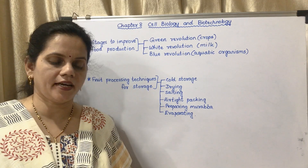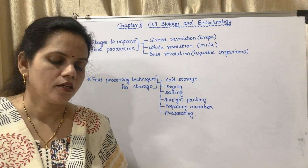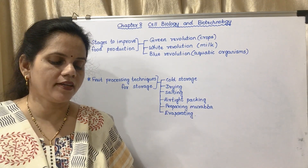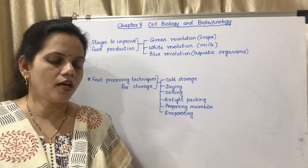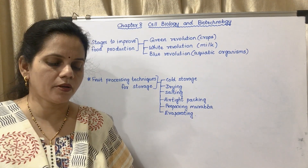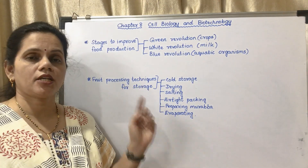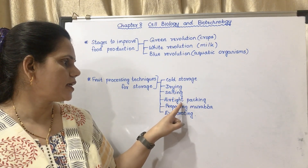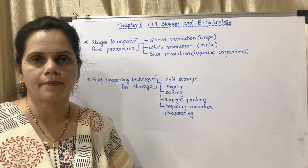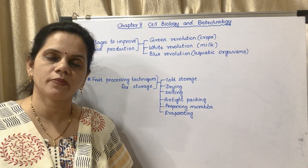Next is fruit processing. We daily use various products prepared from fruits — chocolates, juices, jams, and jellies. These products can be produced by processing fruits. Different techniques used for storage include cold storage, drying, salting, airtight packing, preparing murabba, and evaporating. This could be a two-mark question. We have finished chapter eight — go through the textbook, and if you have any doubts you may ask. Thank you.